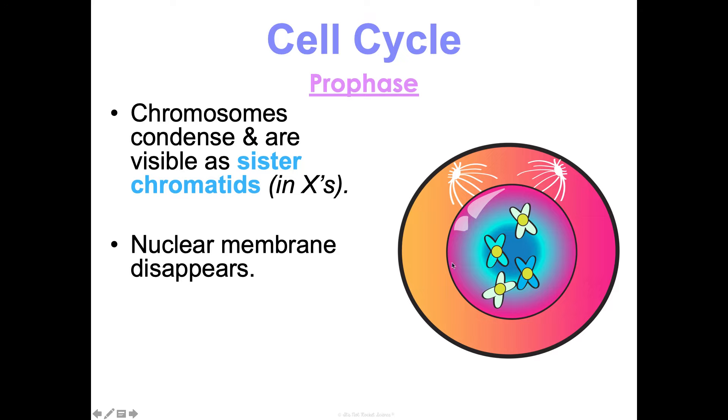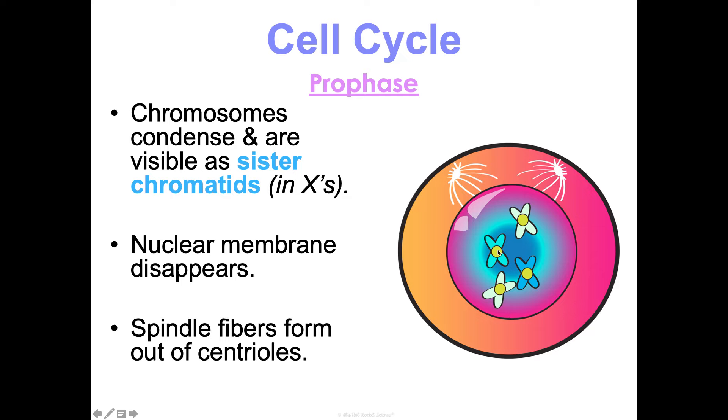The nuclear membrane starts to disappear and dissolve so that spindle fibers can eventually reach the chromosomes, and spindle fibers start forming out of those centrioles.